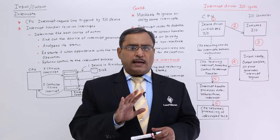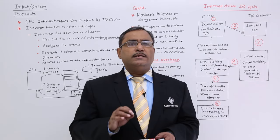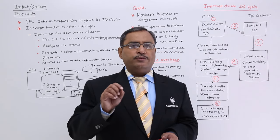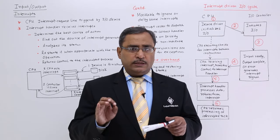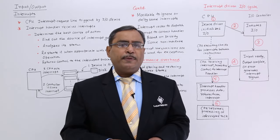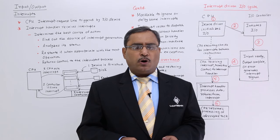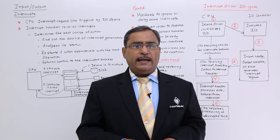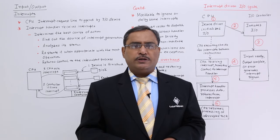For example, if interrupt number 1 has been generated, control will go to say the 20th location of the interrupt vector table. If interrupt number 2 has been generated, control will go to the 24th location. These values are given arbitrarily. In that particular interrupt vector table location, there will be a jump or go-to instruction, with the help of which control will go to the respective interrupt handler program — that is, the program which will provide the necessary service to the interrupt generated.